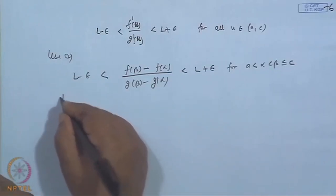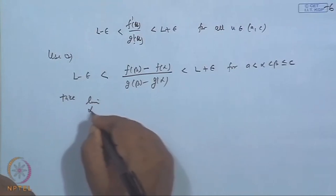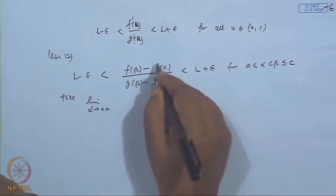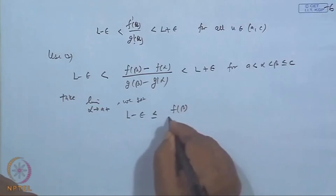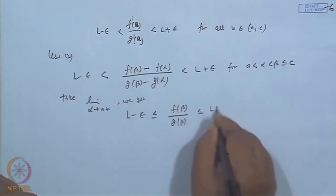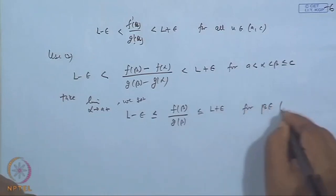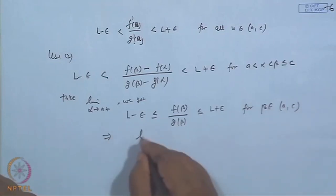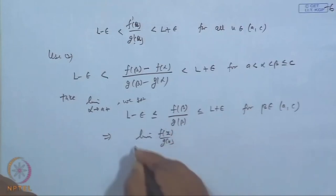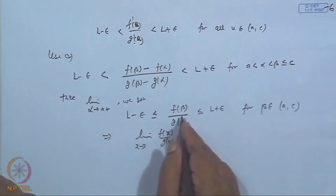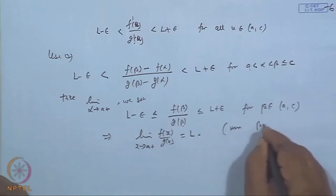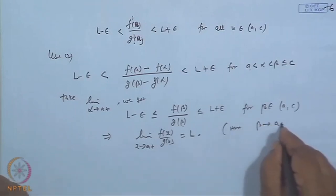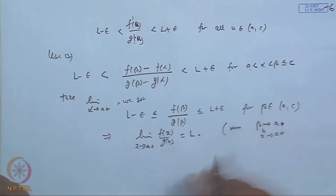Taking the limit as α→a⁺ (with f(a) = g(a) = 0), we get L − ε ≤ f(β)/g(β) ≤ L + ε for all β in (a, c). Therefore, the limit of f(x)/g(x) as x→a⁺ (letting β→a⁺) is also L, since ε is arbitrary.